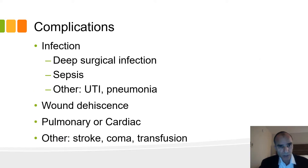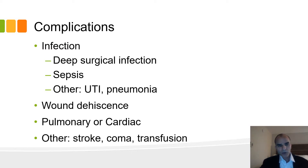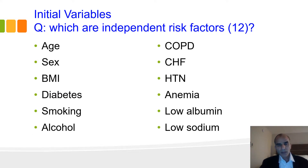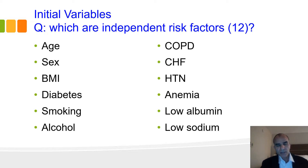They looked at these complications: infection, deep surgical infection, sepsis, pneumonia, urinary tract infection, wound dehiscence, cardiac, pulmonary, and other categories. They started with an educated guess of which variables were important, based on prior data, and looked at 12 total variables — though not all of them turned out to be significant.